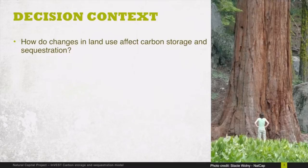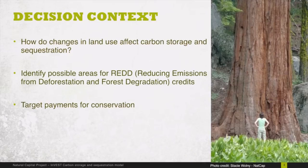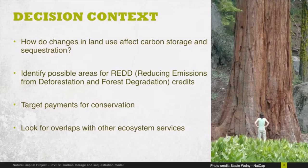Some of the specific decision contexts this model can be useful for include identifying possible areas for REDD credits. Places with high values of carbon storage now, or the possibility of high sequestration rates in the future, may be eligible for REDD credits. Targeting payments for conservation — if a landowner has high levels of carbon storage on their land, they may receive a payment in exchange for not developing that area.